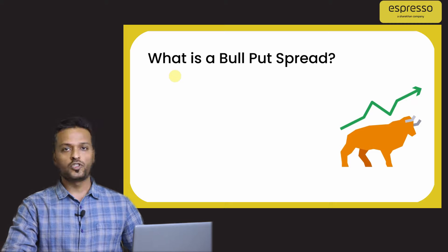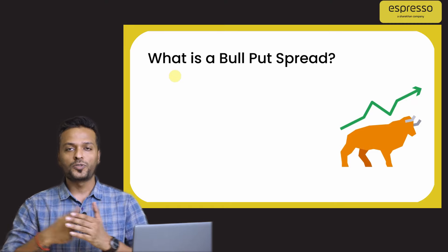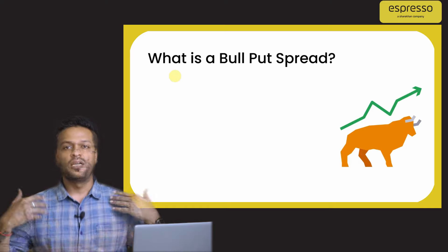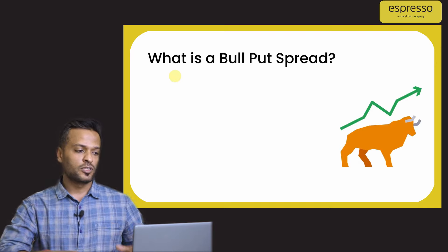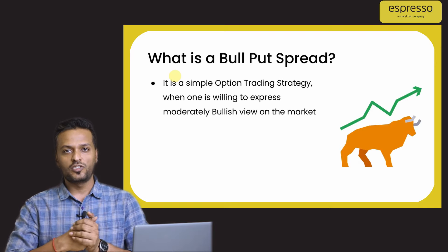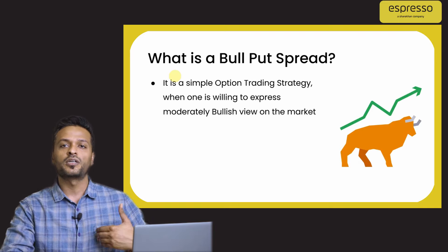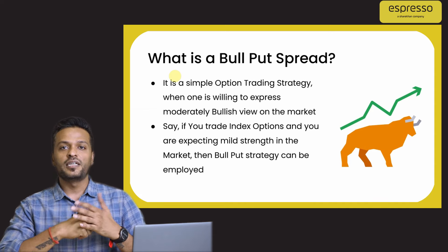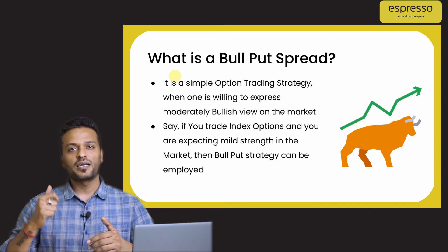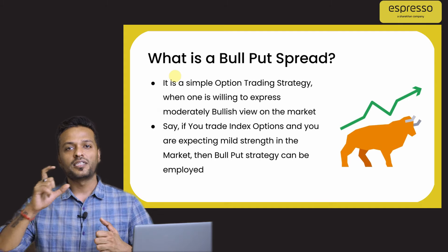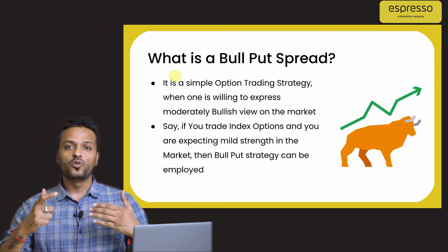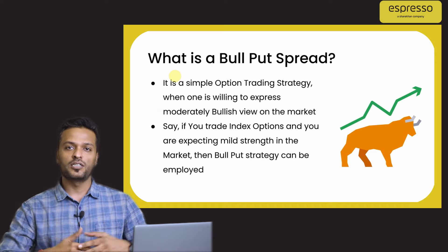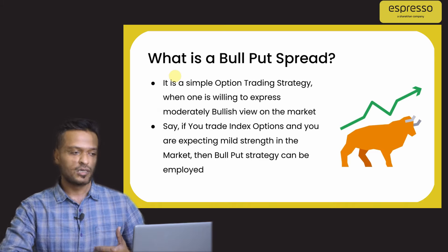Under this strategy, you basically run two options positions simultaneously and take advantage of them. Through this strategy, one is willing to express a moderately bullish view on the market. Say if you are trading index options and you feel the market has upside potential but that is capped to a certain extent, you could take advantage of a small bull ride in the market using the strategy of bull put spread.